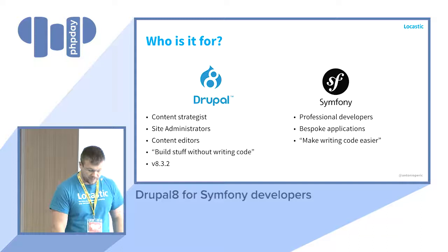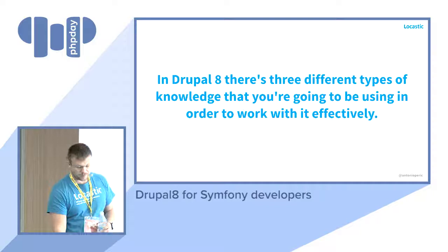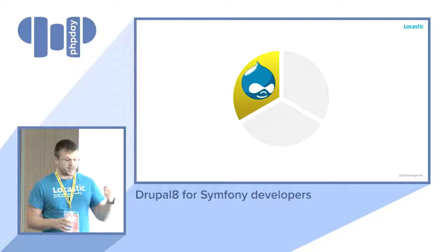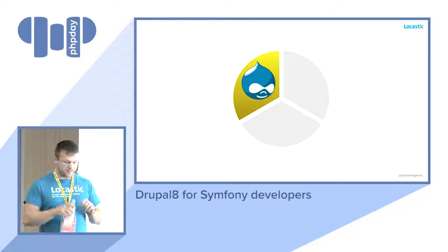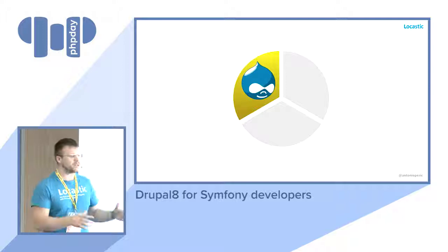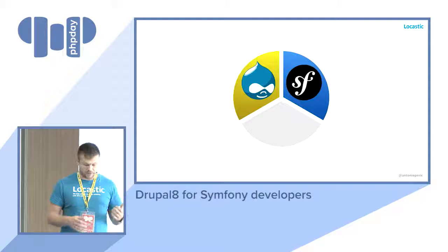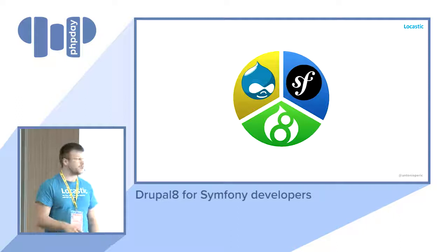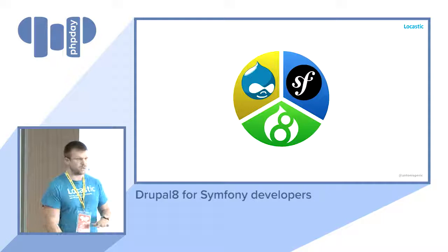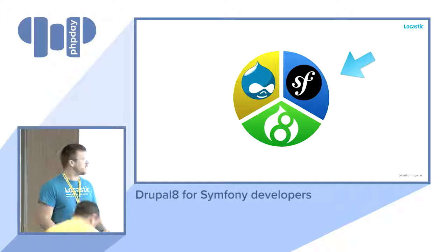In Drupal 8 there are three types of knowledge. The first is legacy Drupal knowledge from versions 6 and 7 — entities, nodes, fields, content types. The second is Symfony-based knowledge like dependency injection and Symfony components, which is the focus of this talk. The third is new things introduced in Drupal 8 like plugins, which we won't cover. Today we focus on that second part — the Symfony part inside the Drupal CMF.